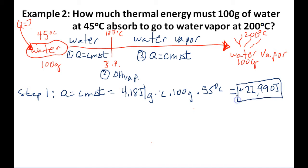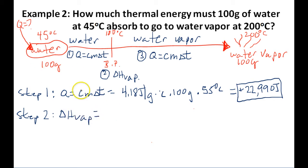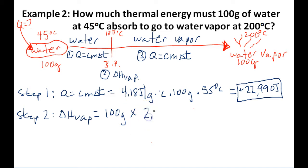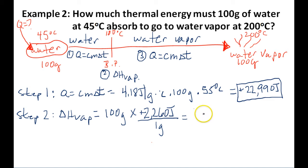In step two, we calculate the heat of vaporization. We take the mass of the water — 100 grams — and multiply it by the heat of vaporization for water, which is 2,260 joules per gram. You can get this value from a textbook, Google, or memorize it. This is positive 2,260 since the water is absorbing thermal energy and turning into water vapor. That gives us 226,000 joules — the amount of energy needed to convert the water to water vapor.